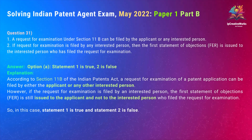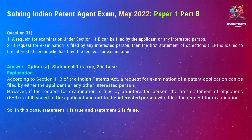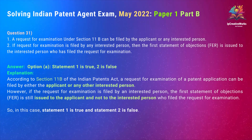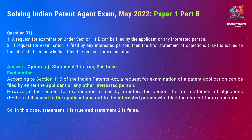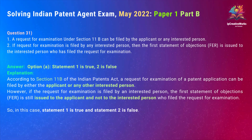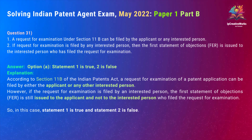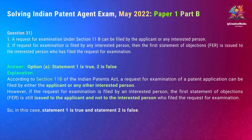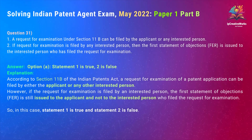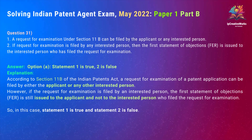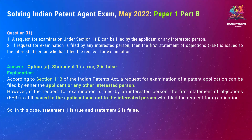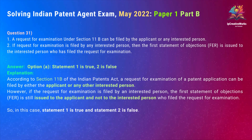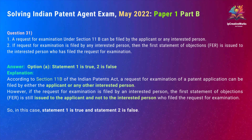Question 31. Statement 1: A request for examination under Section 11B can be filed by the applicant or any interested person. Statement 2: If request for examination is filed by any interested person, then the first statement of objections (F.E.R.) is issued to the interested person who has filed the request for examination. The correct answer to Question 31 is Option A — Statement 1 is true, 2 is false.